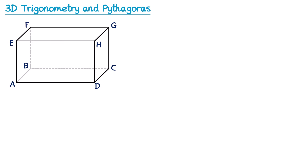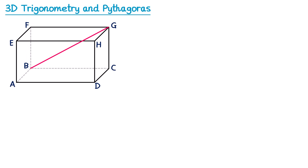Some of the right-angled triangles won't be on the outside faces of the shape — sometimes they'll go through the shape. For instance if I connect B to F, F to D, and back to B, this gives a right-angled triangle with the right angle down at B. You could also have one that starts at B, goes across to G, then over to H and back to B — the right angle is up at G. When the triangle goes through the shape rather than on an outside face, it's usually a more difficult question.